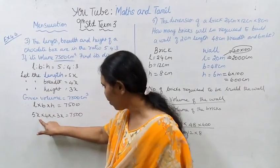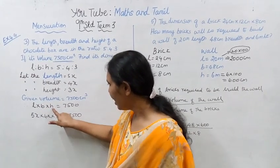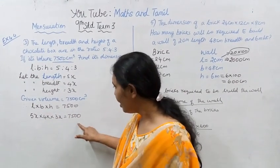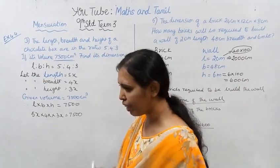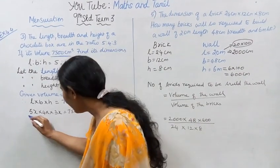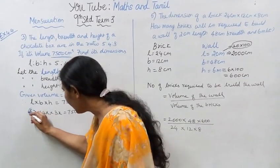Substituting: length is 5x, breadth is 4x, height is 3x. So 5x into 4x into 3x equals 7500.